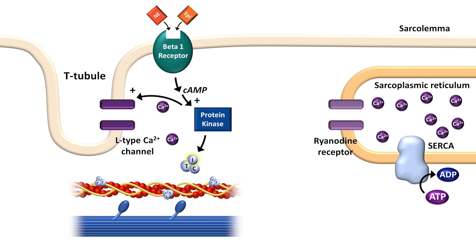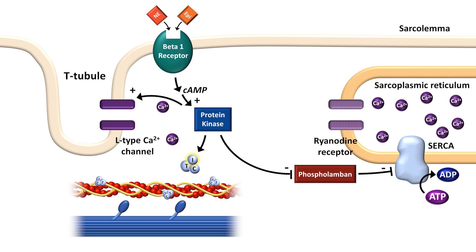The kinase also inhibits a protein called phospholamban, which is otherwise inhibiting SERCA. So in short, release of catecholamines from the sympathetic division of the autonomic nervous system not only stimulates contraction by increasing the conductance of the L-type calcium channels, it also ultimately results in the inhibition of the actin-myosin interaction it initially stimulated.